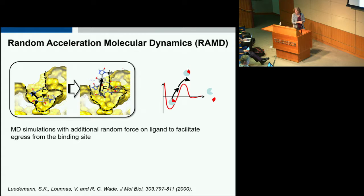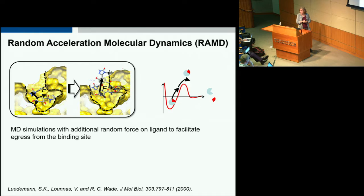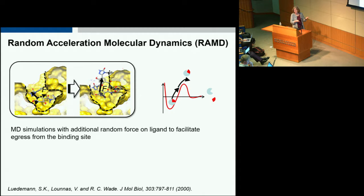tau-RAMD is based on the random acceleration molecular dynamics method developed to understand how small molecules exit buried binding sites in proteins. The technique is simple: we do a standard MD simulation with the addition of a force applied to the centre of mass of the ligand in a random orientation. We run for a certain number of steps and check whether the ligand moved. If it moved, we keep going; if not, we choose a new random orientation for the force and continue.